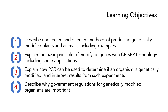Today we have four learning objectives. The first is to describe undirected and directed methods of producing genetically modified plants and animals, including examples. The second is to explain the basic principle of modifying genes with CRISPR technology, including some applications. The third is to explain how PCR can be used to determine if an organism is genetically modified and to interpret results from such experiments. And the fourth is to describe why government regulations for genetically modified organisms are important.